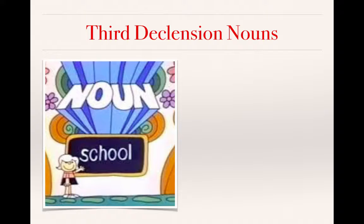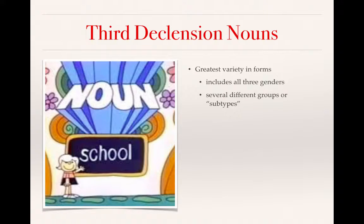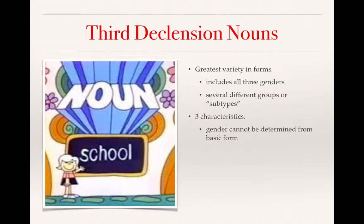Third declension nouns show the greatest variety in forms. They include all three genders. There are several different groups or subtypes of third declension nouns, so memorizing them or getting a handle on them can be difficult. There are three characteristics to third declension nouns. First, the gender cannot be determined from the basic form, which means you really need to be memorizing the definite article along with the nominative case of that noun.